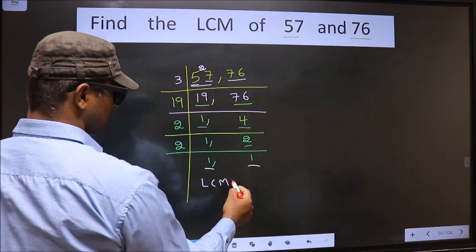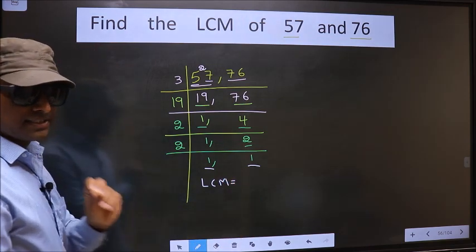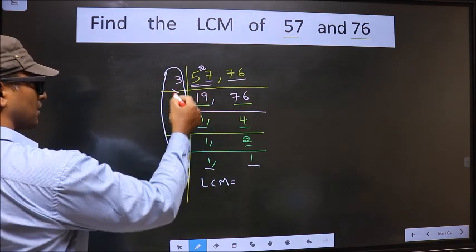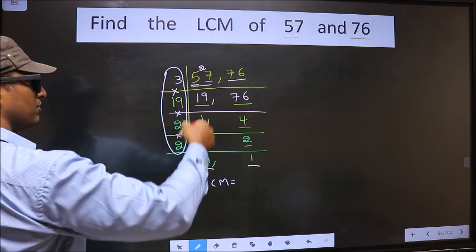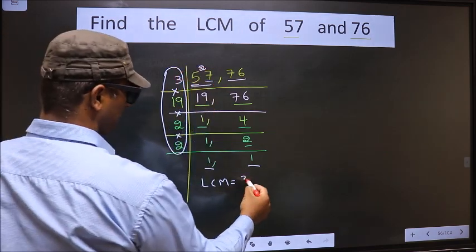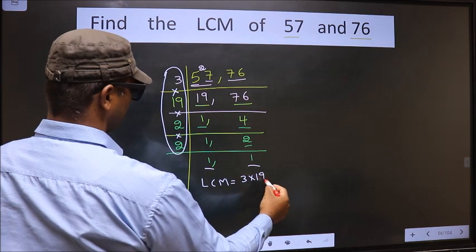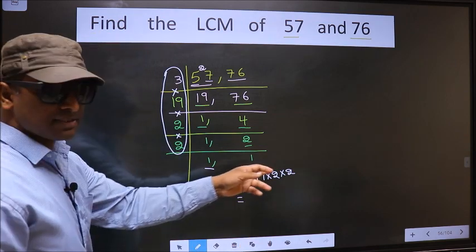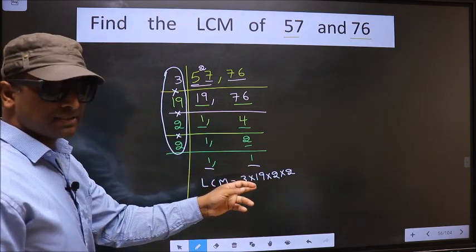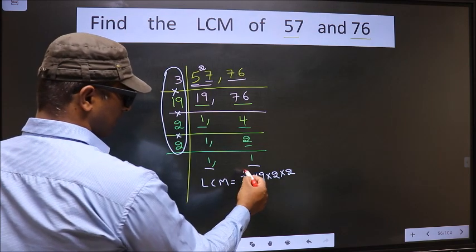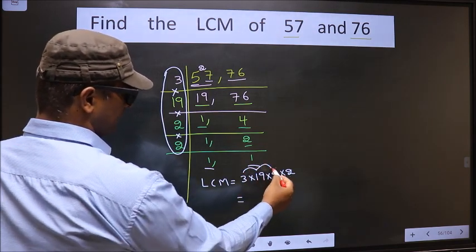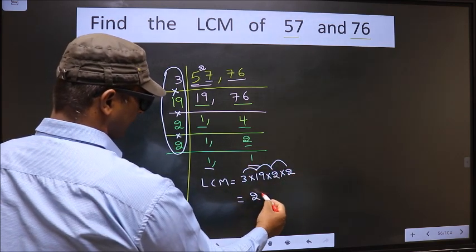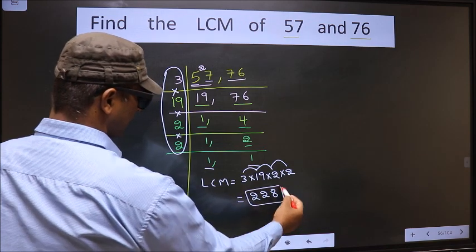So our LCM is the product of these numbers. That is 3 into 19. Now let us multiply these numbers. That is 3 into 19, 57 into 2, 114 into 2, 228 is our LCM.